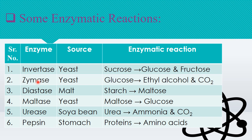The enzyme zymase is named from the alcohol it helps produce. Maltose is a disaccharide sugar, which is why the enzyme is known as diastase. Maltose converts into glucose, and the enzyme is named with respect to the reactant. Similarly, urea is the reactant to obtain ammonia and carbon dioxide, hence the enzyme is named urease. The biochemical process also takes place in our body converting proteins into amino acids.